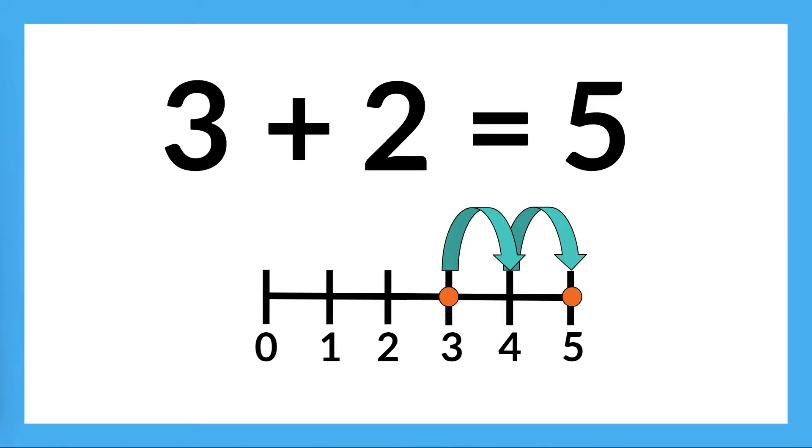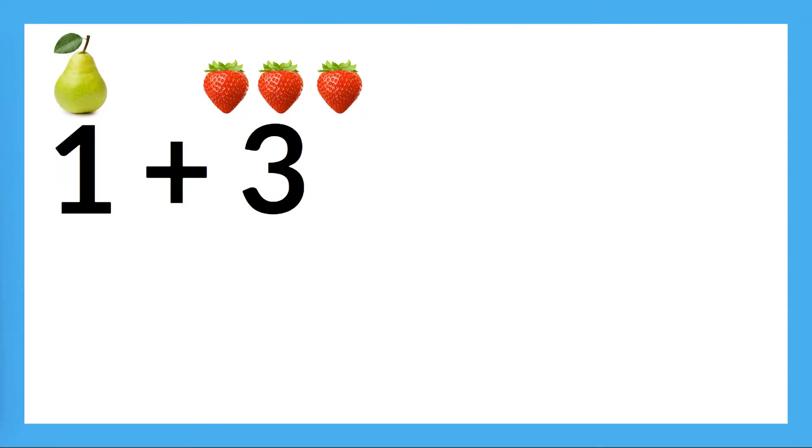Let's try one more problem together. Next, we'll add together some pears and strawberries. This addition sentence tells us how many of each part we have. Try reading this out loud to yourself. This says one plus three. We can add these parts together to find the whole. Remember, there are lots of ways to solve addition problems. Pause the video here and try to solve this problem by yourself.